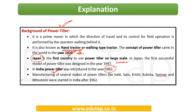One other important point that we tend to neglect: the manufacturers of power tillers include Iseki, Sato, Krishi, Kubota, Yanmar, and Mitsubishi. These were started in India after the year 1962. There can also be a simple question regarding the manufacturers of power tillers, so kindly make note of these names as well.